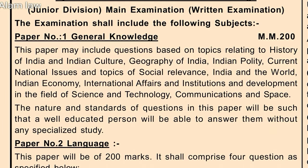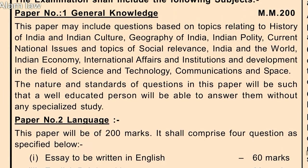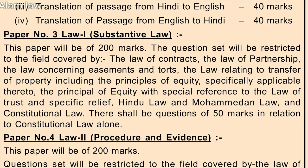Now moving to the scheme for the main examination. There will be five papers. Paper Number One shall be of General Knowledge, with the same syllabus as the preliminary examination Paper First, and shall be of 200 marks. Paper Number Two shall be of Language, which will consist of an essay to be written in English for 60 marks, English précis writing, translation of a passage from Hindi to English for 40 marks, and translation from English to Hindi for 40 marks.